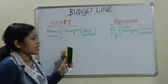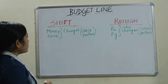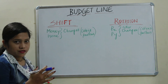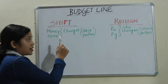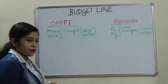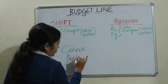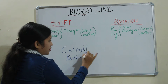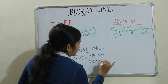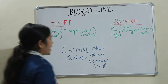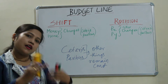So how does the budget line shift and how does it rotate? There are two conditions. When money income changes, the budget line will shift — ceteris paribus. In economics, ceteris paribus is very important; it means other things remain constant. Only money changes, other things remain as before.